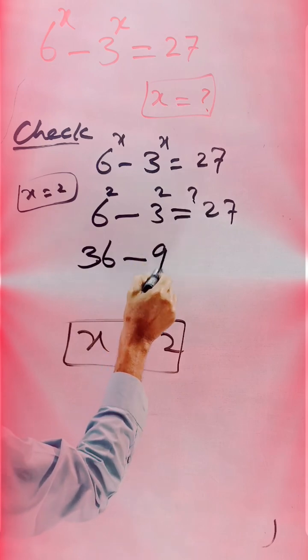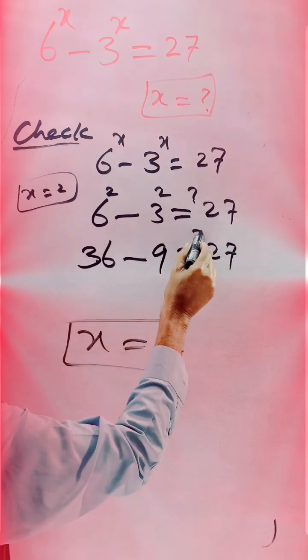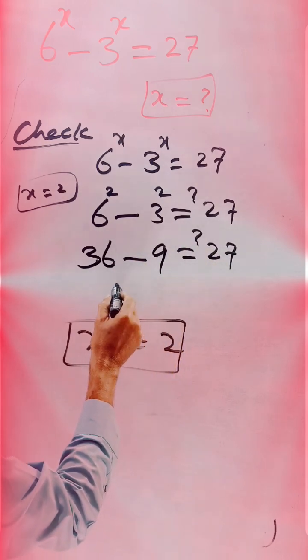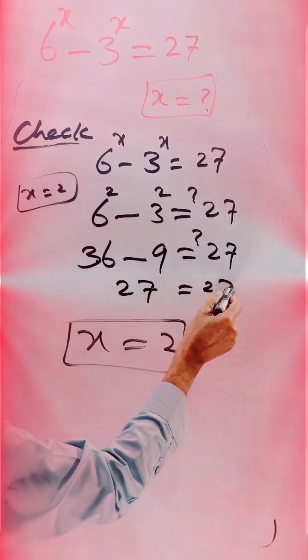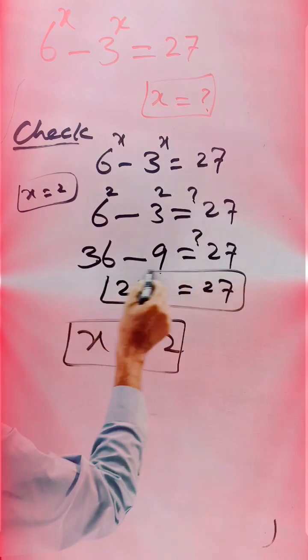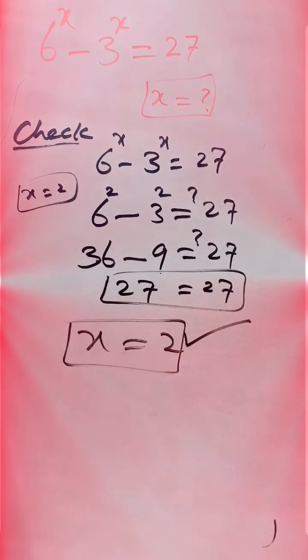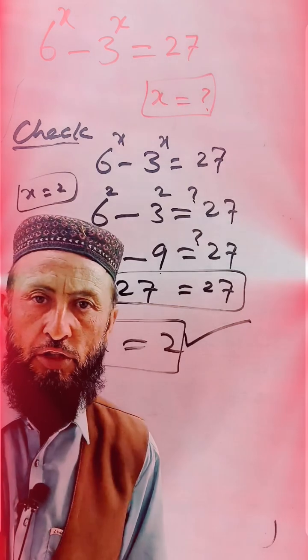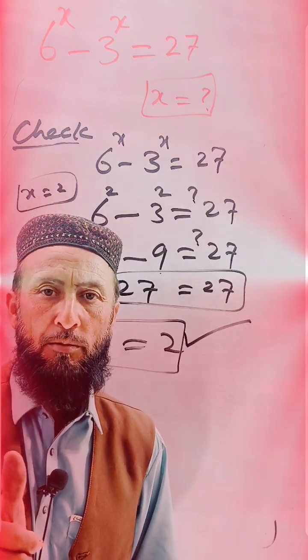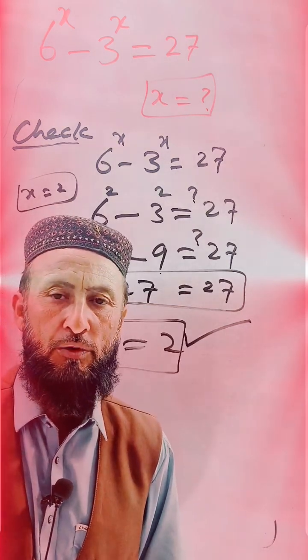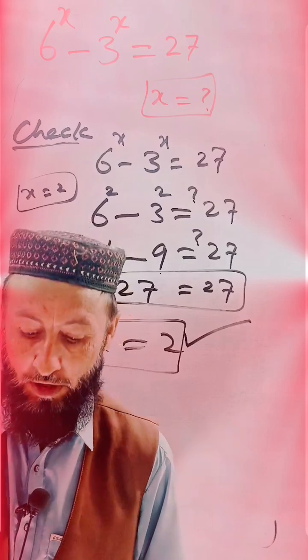We get 36 and 9 is equal to 27, so we subtract, 37 minus 9, we get 27 is equal to 27, which is our solution. x is equal to 2 is our solution. Thank you very much for watching. Please subscribe my channel and share this video more and more. Thanks again for watching.